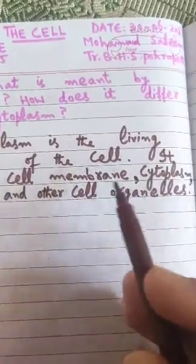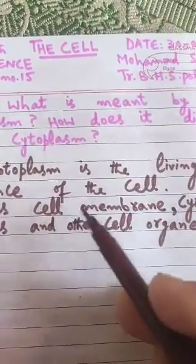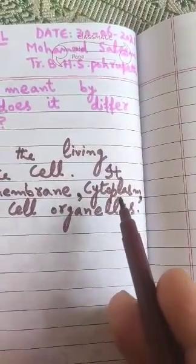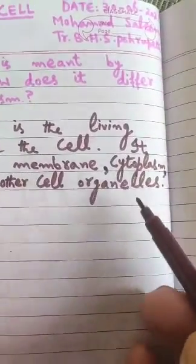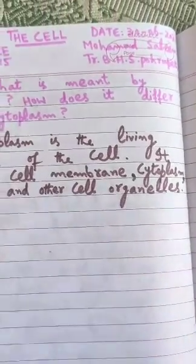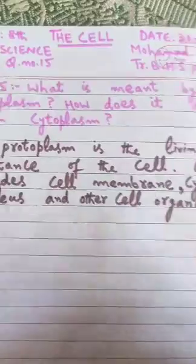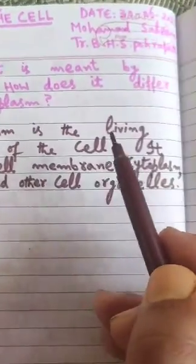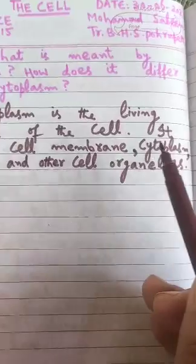In protoplasm, there is everything that keeps the cell living. The cell membrane is very important for the movement of particles in and out. Cytoplasm is a jelly-like substance that provides a favorable environment. The nucleus controls all the functions. Then we have cell organelles, which have different functions. All these living parts together are known as protoplasm. Protoplasm is the living substance of the cell — it includes cell membrane, cytoplasm, nucleus, and other cell organelles.